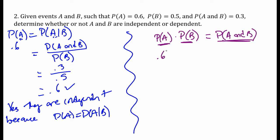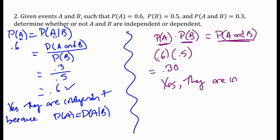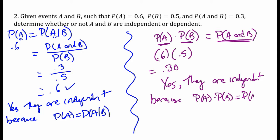So 0.6 times 0.5 equals 0.30, which equals 0.3. These events are independent because the probability of A times the probability of B equals their intersection. So there are two different ways to go about it: the probability of A equals the probability of A given B, or find their product and see if it matches the probability of both happening. They come from the same idea — you should have both tools at your disposal.